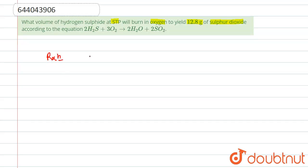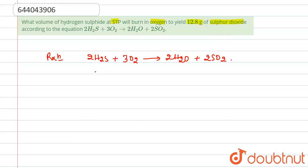Our reaction is: 2H₂S plus 3O₂ gives 2H₂O plus 2SO₂. So this is our reaction. From here we can say that 64 grams of SO₂ — let us calculate the molecular mass of SO₂.